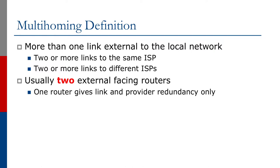So what do we mean when we talk about multi-homing? We've seen up to now we've talked about getting two connections to upstream providers. Multi-homing means that we have more than one link external to the local network. Now this could be two or more links to the same ISP, or it could be two or more links to different ISPs.